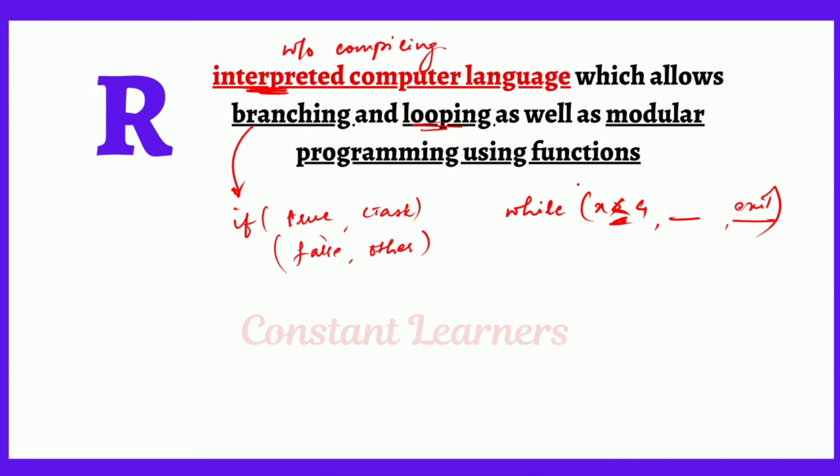Then modular programming using functions means what? What is a modular programming? Modular programming is a concept of dividing one program into multiple modules. We divide the program into multiple modules depending upon its functionality. Depending upon the functionality we divide the program into multiple modules. That is nothing but modular programming. I hope that this was clear. Another aspect of R is that it can be integrated with procedures written in other languages like C,